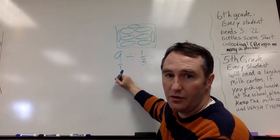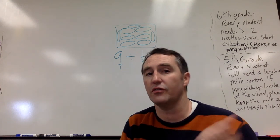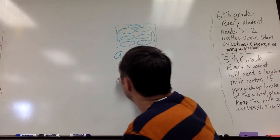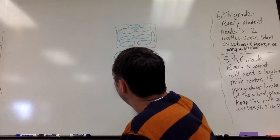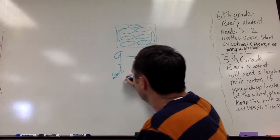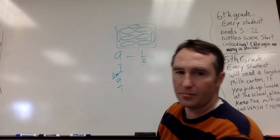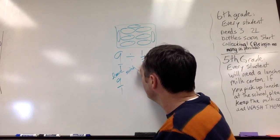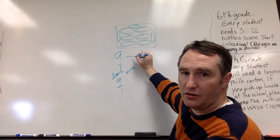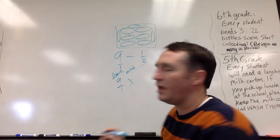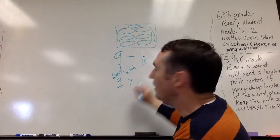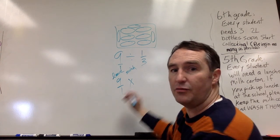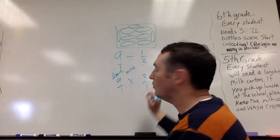Now what we're going to do is we're going to do this thing we've talked about in class which is leave switch and flip. So we're going to leave this guy alone, nine over one, we're going to switch the sign, switch the sign from division to multiplication, yeah I got it right this time I didn't say it backwards, and then we're going to flip this fraction upside down so instead of being one over three it's going to be three over one.